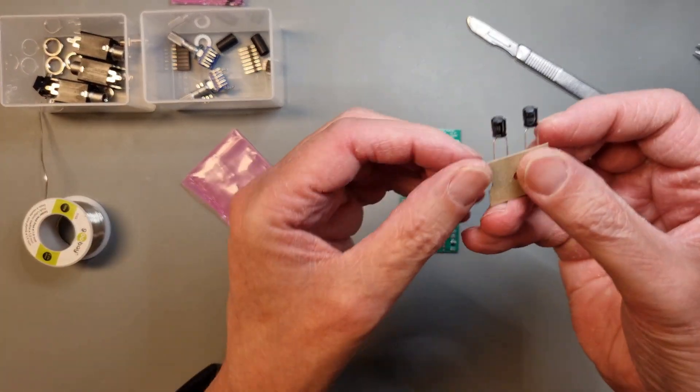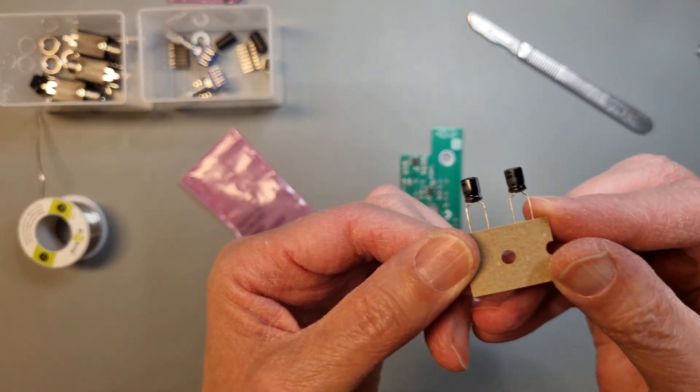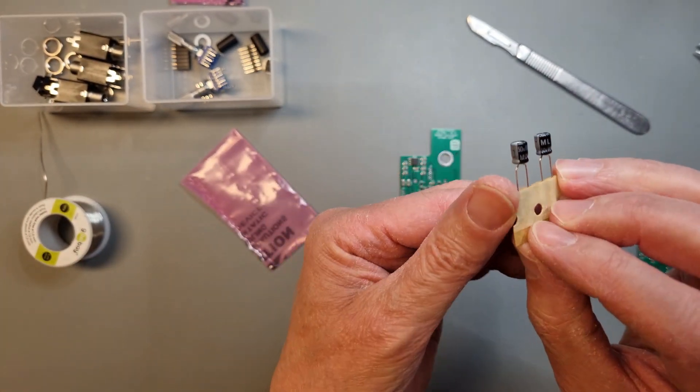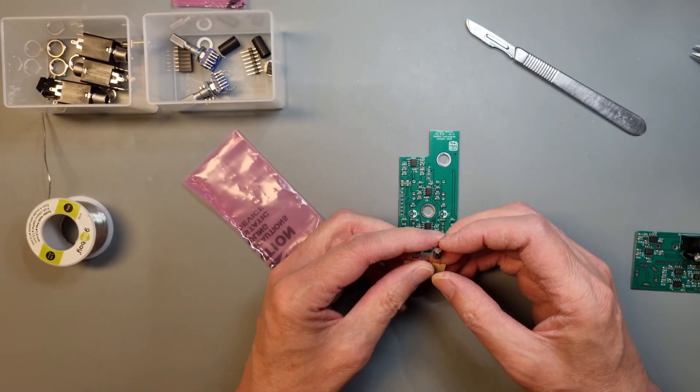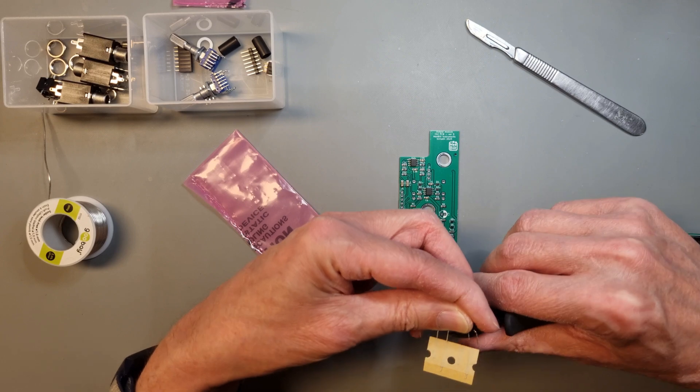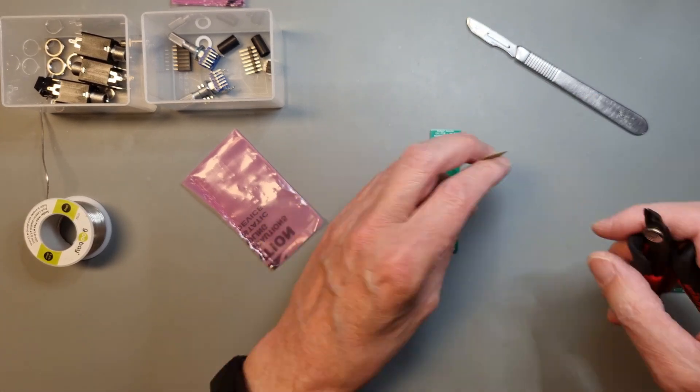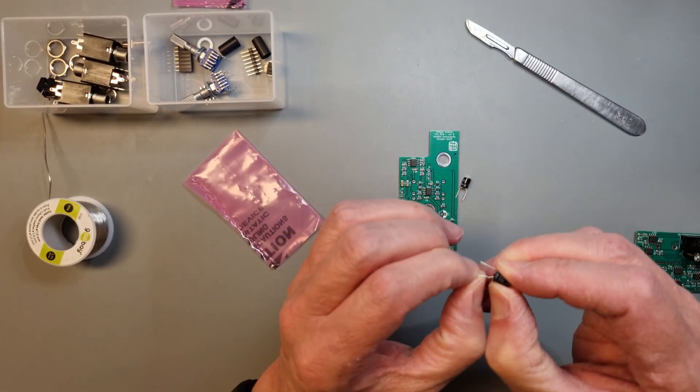The smaller 10 microfarad, 50 volt, electrolytic capacitors are next, and they should be mounted on the component side of the control PCB. The same goes for these capacitors. The leg with the minus marking should go onto the side with the large white marking on the PCB.